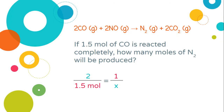We're going to set up a cross multiplication problem, which means we're going to multiply the pink numbers and the blue numbers times each other, and we'll set those equal to each other.